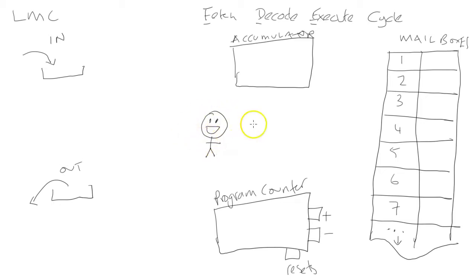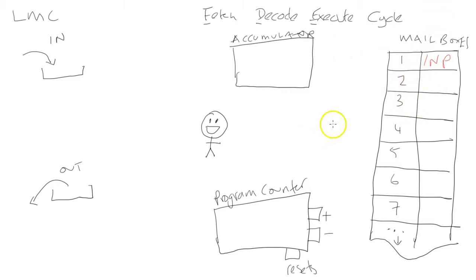The man's job is to go to the program counter, then go to the mailbox it points to, fetch an instruction or piece of data, and do something with it. Let's write some instructions into some of the mailboxes for a program which is going to add two numbers together. We'll have input, store, input, add, out, and then halt.